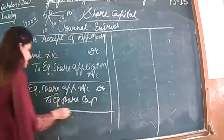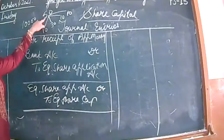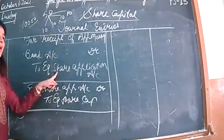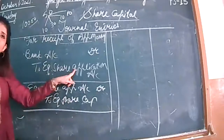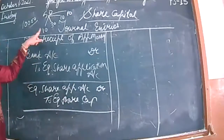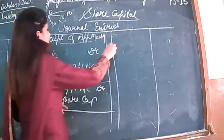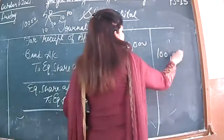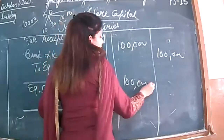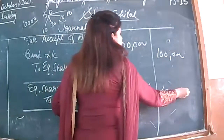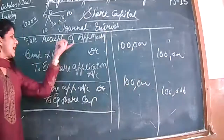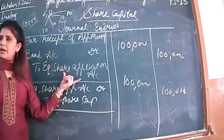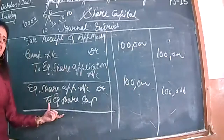Now remember the entire life of the application money received. The second entry is for the application money due — being the application money received on 10,000 shares at the rate of rupees 10 each. The debit word comes in, so the bank has to be debited. In application form, the bank has to credit the application. The application is raised and transferred to capital — that is the second entry.